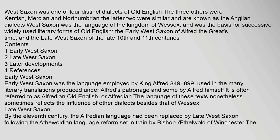West Saxon was one of four distinct dialects of Old English. The three others were Kentish, Mercian, and Northumbrian. The latter two were similar and are known as the Anglian dialects. West Saxon was the language of the Kingdom of Wessex, and was the basis for successive widely used literary forms of Old English.